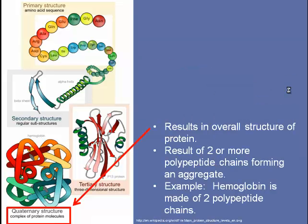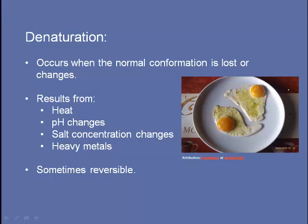Proteins are very vulnerable. Their secondary, tertiary, and quaternary structures can be disrupted by a number of things, and when this happens, we call it denaturation. It occurs when the normal conformation or shape is lost or changes. This results from heat, pH changes, salt concentration changes, or the presence of heavy metals like mercury or lead. Sometimes it's reversible and sometimes it's not. Since protein function is so closely related to structure, denaturation is a serious condition when it occurs to proteins inside living things.